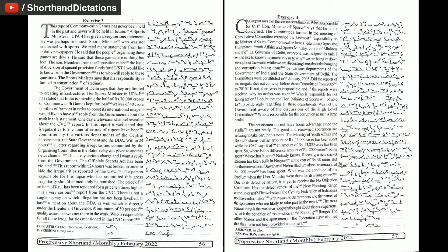One day, a television channel revealed the CVC report. In this report, it was stated that irregularities to the tune of crores of rupees have been committed by the various departments of the central government, the state government and the DDA. Within 24 hours,